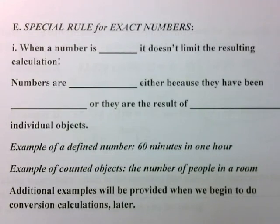So far we have covered how to determine if a digit is a significant figure in a number, and we've covered the two most basic rules for performing calculations using significant figures for addition and subtraction and for multiplication and division. Now I'd like to talk briefly about a special rule for exact numbers.